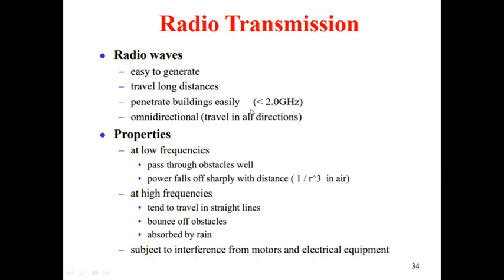Next, radio transmission. Radio waves can be easily generated and can travel through long distances — that is why we receive FM radio and All India Radio. These radio waves can also penetrate buildings easily, and they are omnidirectional, meaning they travel in all directions. Radio waves can work at both low and high frequencies. At low frequencies, they can pass through obstacles well, with signal strength dropping as 1/r³ in air.